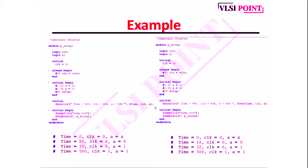In the second example using $realtime instead of $time, the difference is that real-valued delays are considered. With 1ns precision, 1.55 is rounded to 1.6, so 1.6×10 = 16ns. At time 16, clock is 0 and a is 0. Then 1.55+1.55 = 3.2 (rounded), so 3.2×10 = 32ns; at time 32, clock is 0 and a is 1. At time 500, clock has negated to 1 and a is 1.